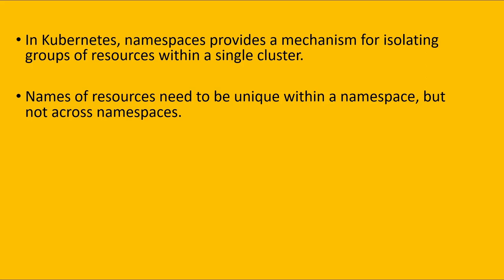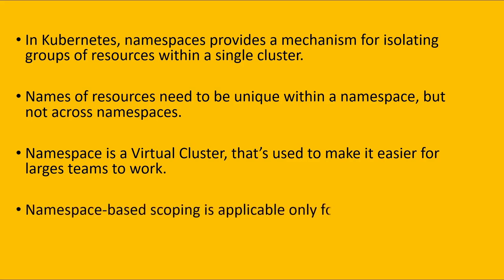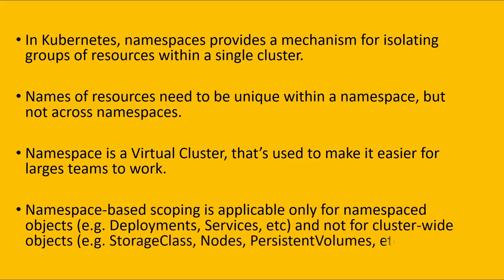To explain further, we can create pods with the same name as long as they are under two different namespaces — so we can have pod-one in namespace-one and pod-one in namespace-two. Namespaces act as a virtual cluster that makes it easier for large teams to work. Namespace-based scoping is applicable only for namespaced objects like deployments and services, and not for cluster-wide objects like storage classes, nodes, and persistent volumes.